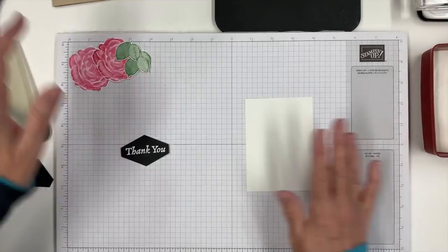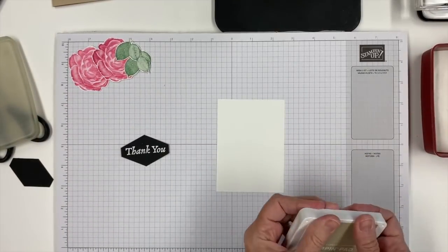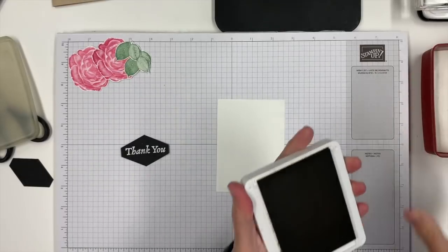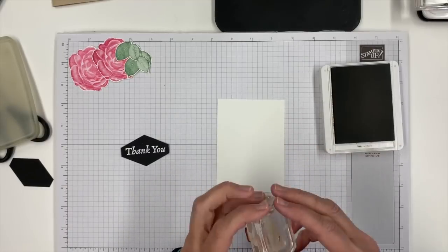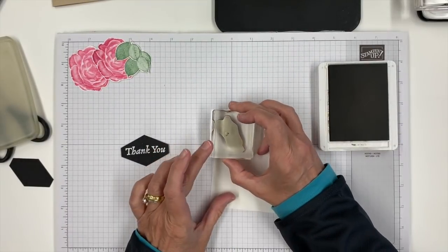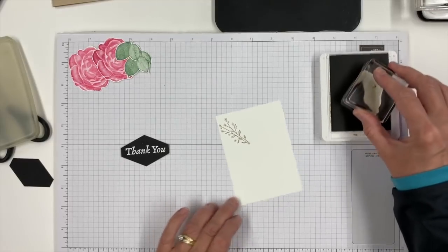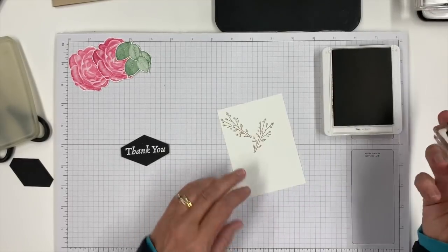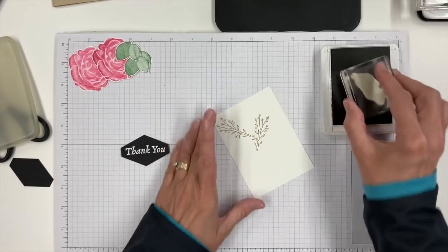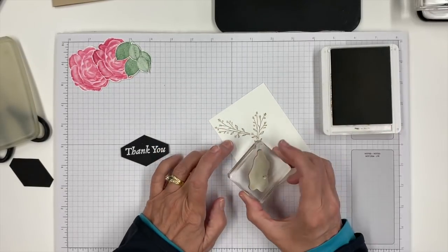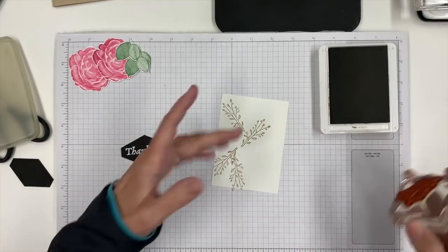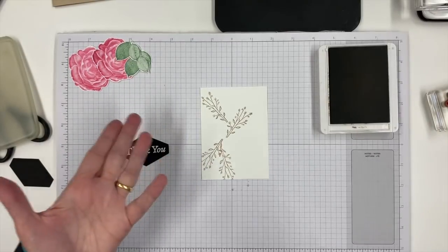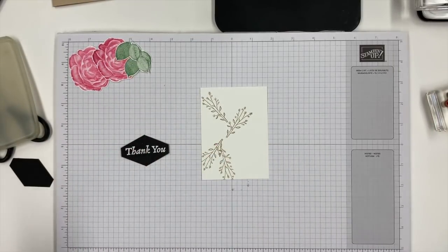Let's go back to our basic white layer that will be the front of our card. I'm going to take crumb cake and one of the images from our stamp set to just create a little bit of a background here. This is going to get covered up from those flowers that I cut out, but I wanted a little bit of this greenery showing as a background on that white.